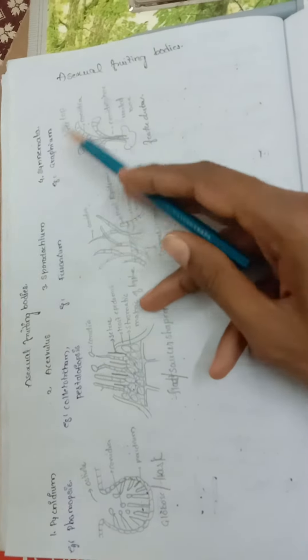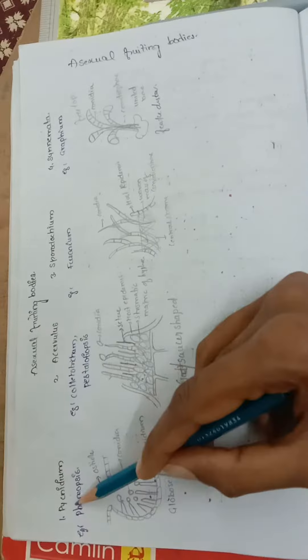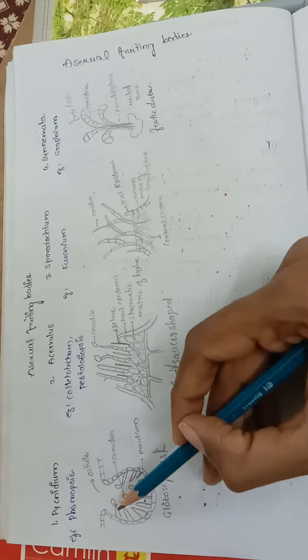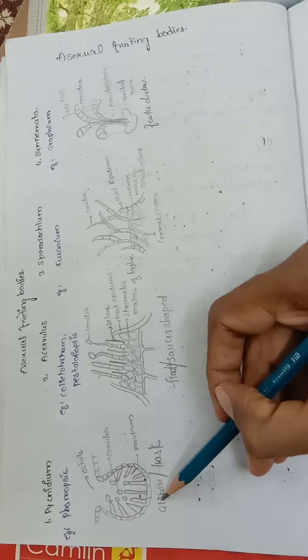Others include acervulus, sporodochium, and synnema. An example of pycnidium is Phomopsis. Pycnidium is a globose or flask-shaped fruiting body which produces numerous conidiophores on the peridium.